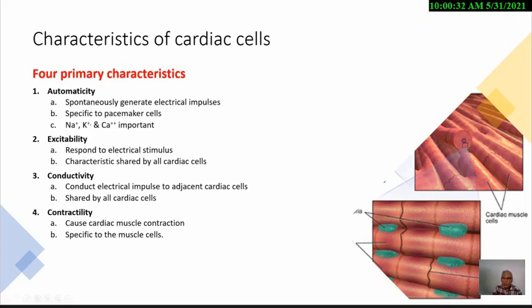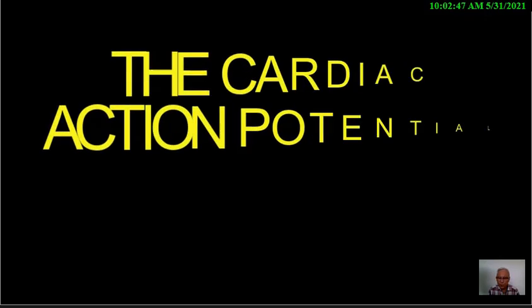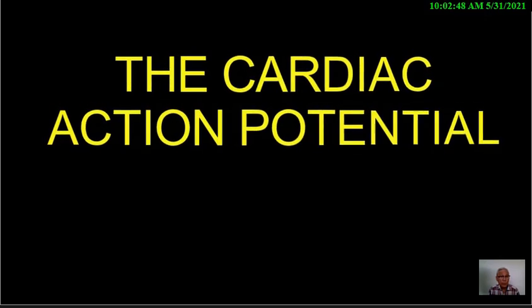Now let's talk about how an electrical current is generated and how it is spread from one area of the heart to another. Let us discuss how electrical currents are generated within cardiac cells — specifically, the cardiac action potential.